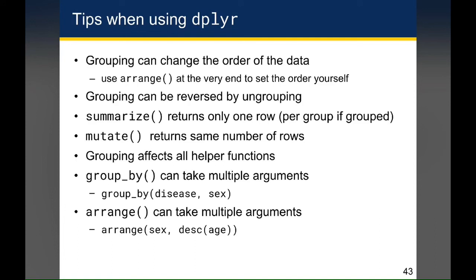Remember that group_by can take multiple arguments — you don't have to specify just one column, you can specify as many columns as you want. Similarly, arrange can also take multiple arguments. For example, arrange(sex, desc(age)) would arrange sex in alphabetical order and then within each sex sort age in descending order.